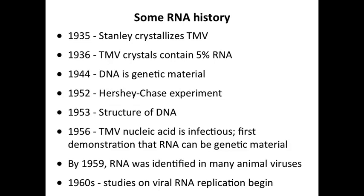By 1959, RNA was found in many animal viruses. Tobacco mosaic virus is a plant virus, and people said, so what? The real viruses — what about them? So they joined the group. And finally, in the 1960s, people really began studying viral RNA replication. And that's what we're going to talk about today.